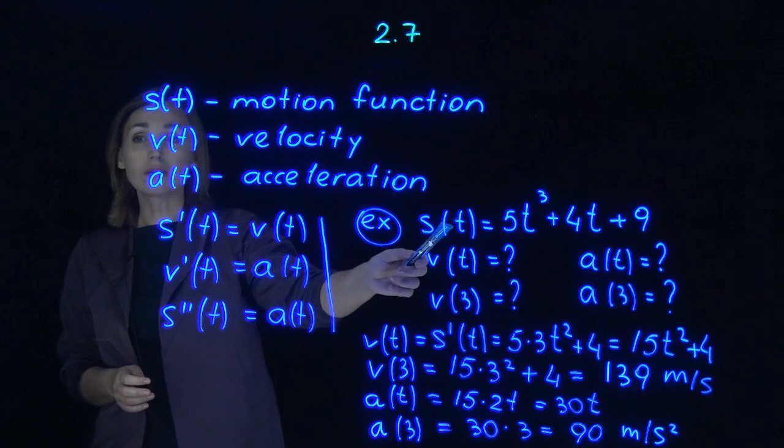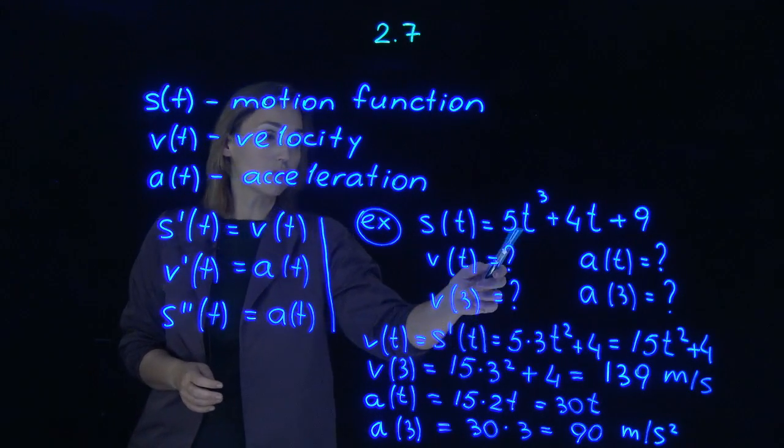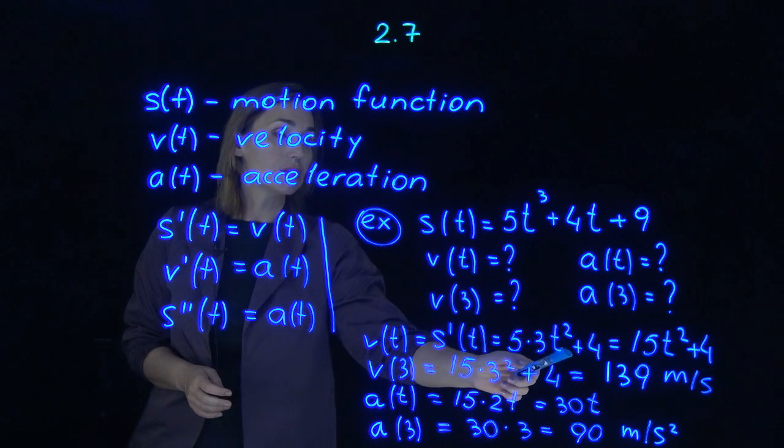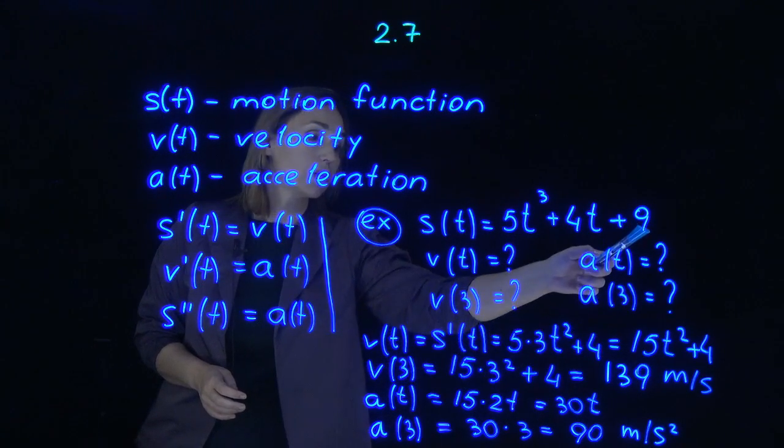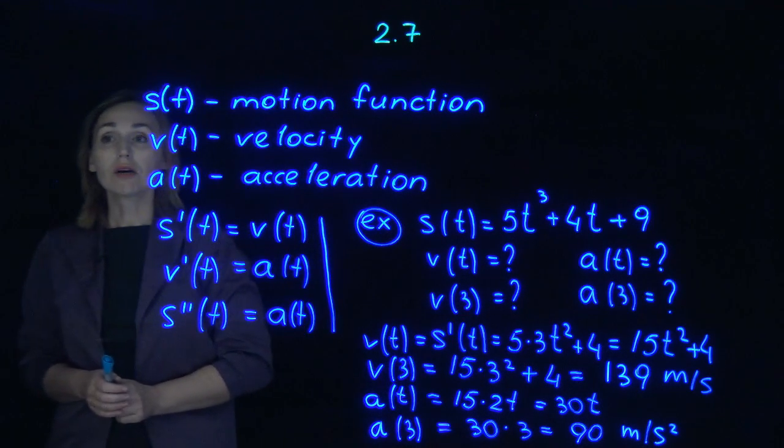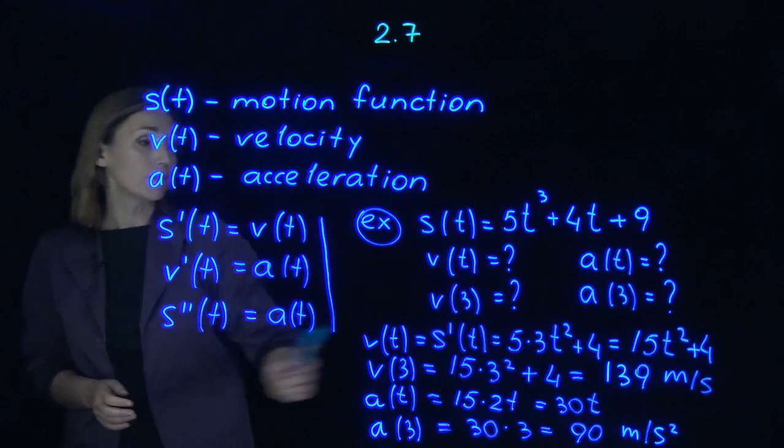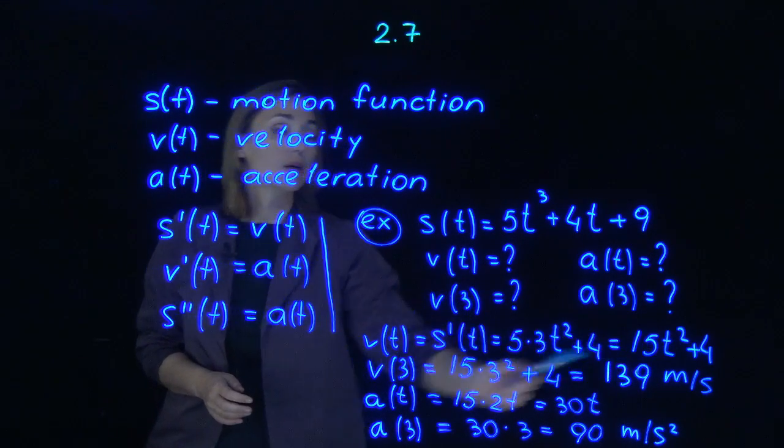Velocity is derivative of S. So let's differentiate S. You will get 5 from here, 3t squared. From 4t you will get just 4. Derivative of 9 is 0. 5 times 3 will give you coefficient 15, that is here, t squared plus 4.